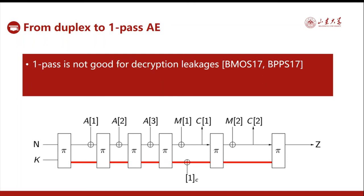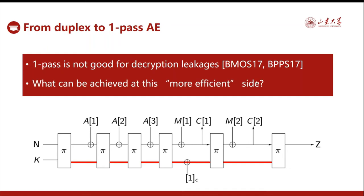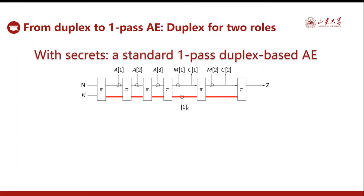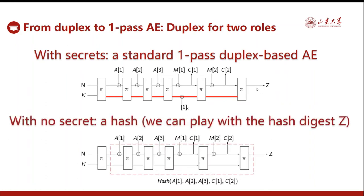On the efficiency side, we may prefer one-path designs. It has been known that one-path is not good for resisting decryption leakages. So the question is: if we insist on this more efficient approach, what can be achieved? We note that the duplex could have two roles in this construction. First, when the internal state has not been recovered, the duplex functions as the standard one-path AE. Then, when the internal state has been fully recovered from side-channel leakages, the duplex collapses to a keyless cryptographic hash — the same as the sponge construction. So there is still some cryptographic properties that can be used.